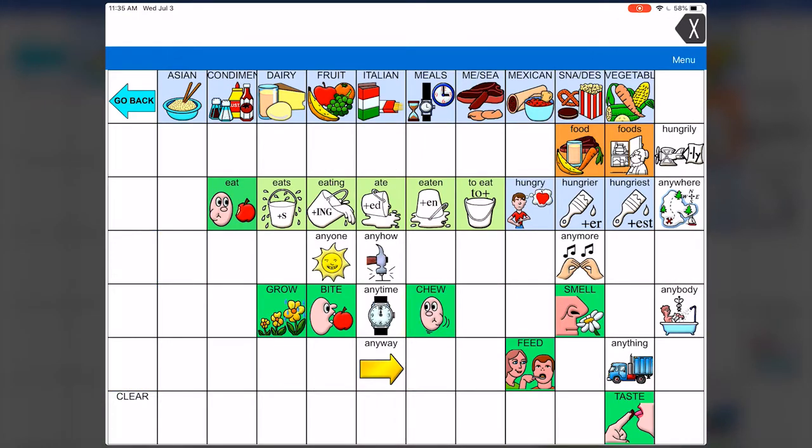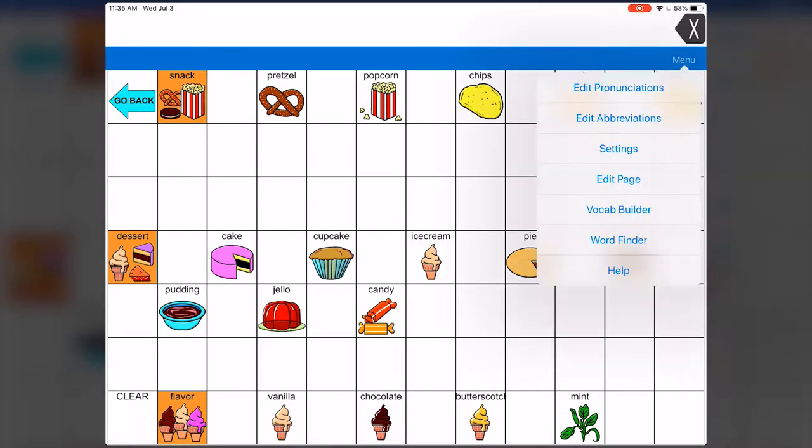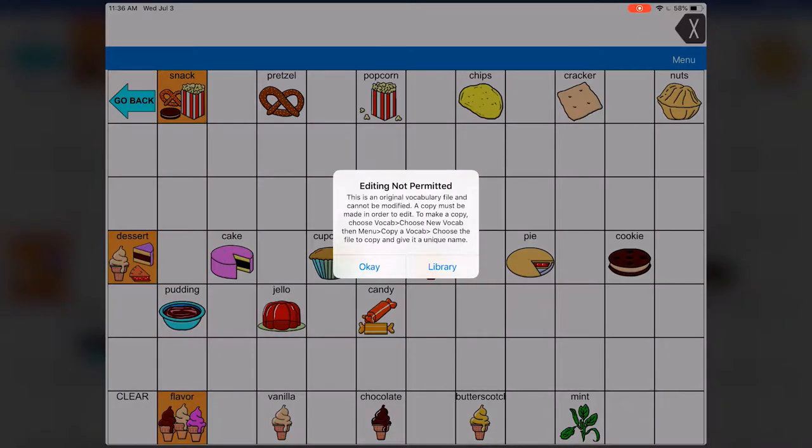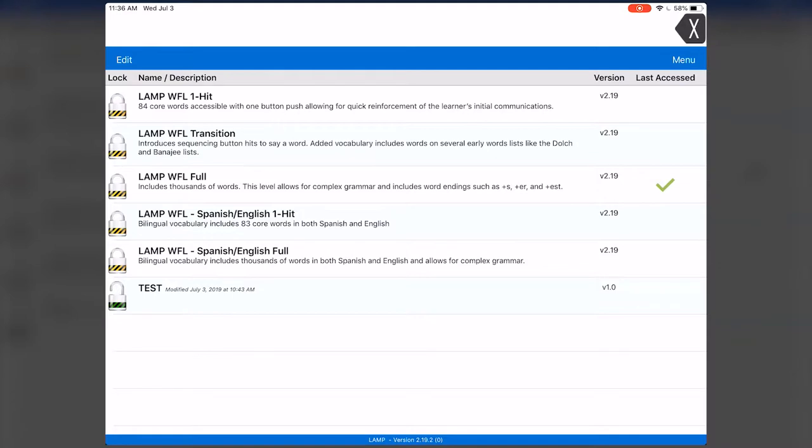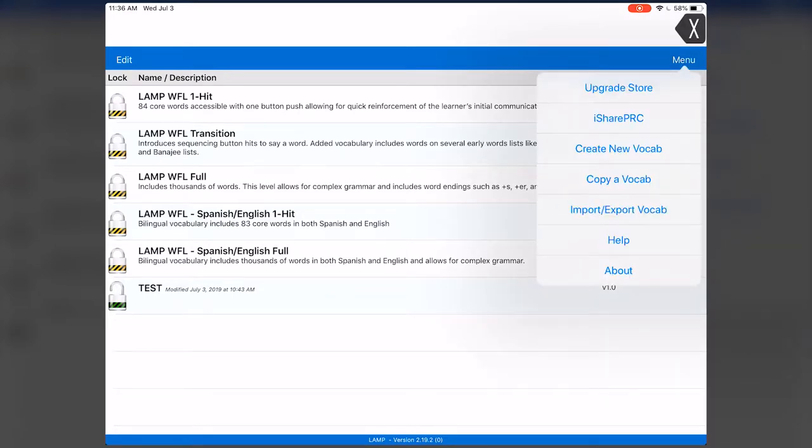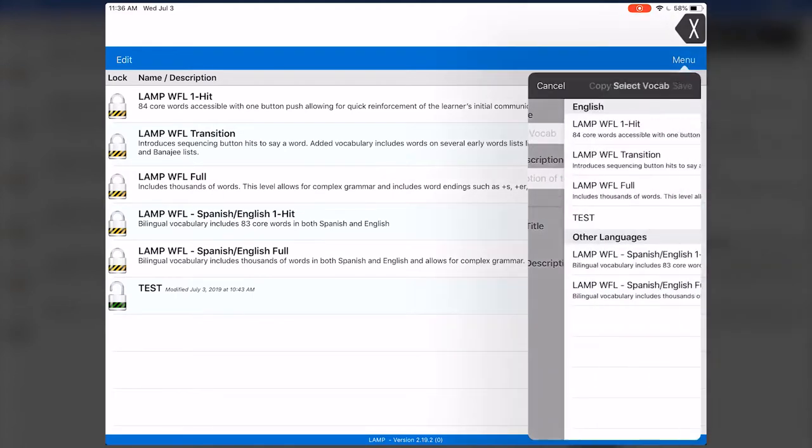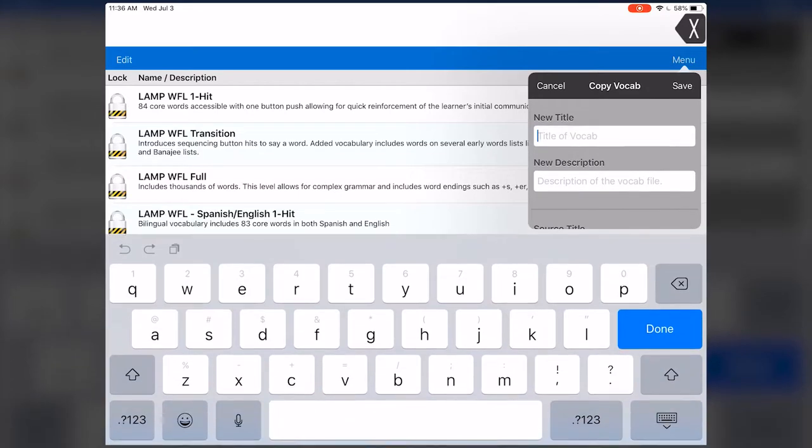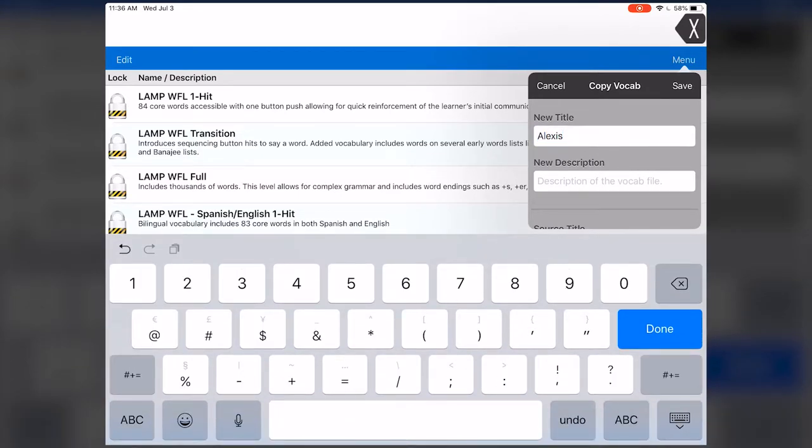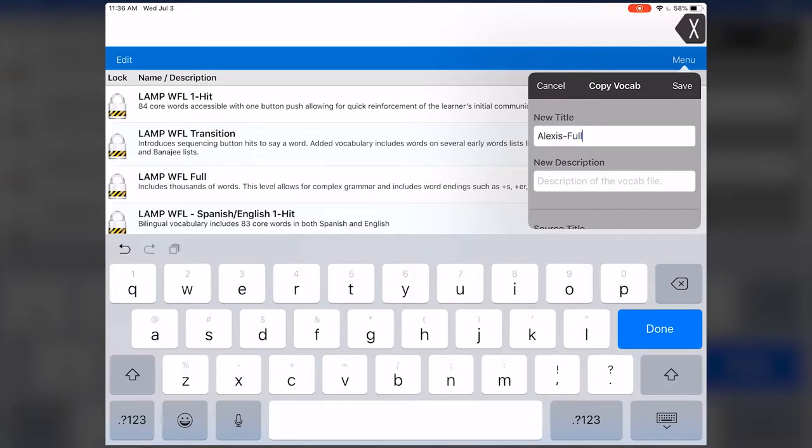So although there is a wealth of both core and fringe vocabulary within LAMP Words for Life full, I might want to add in some of my favorite foods that weren't programmed in for me. So I'm going to clear this message out and go into eat, select snacks, and edit this page. To do that, I go up to menu, click edit page, and because PRC wants to preserve the integrity of the base LAMP Words for Life page, I'm going to need to go into library and create a duplicate of this page by copying the vocabulary and creating an editable version. So I'm going to select copy vocab. I'd like to copy the full version, and I'm going to give this my name. Alexis and full to know that this is a copy of the full. So now I have my editable page.